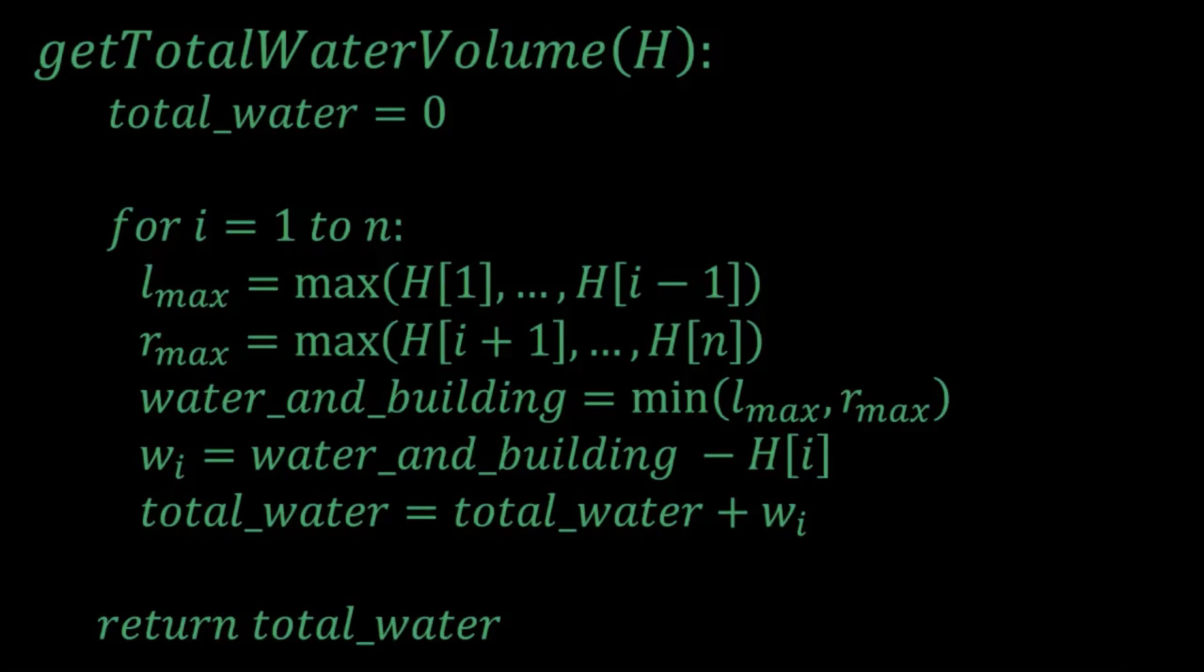So here's the algorithm we stopped at in the last video. I mentioned that we can take for each index i the maximum building to its left from index 1 to i-1 and the maximum index on its right from index i+1 to n. Then take the minimum of those maximums and calculate the water at building i.